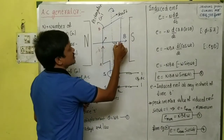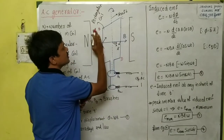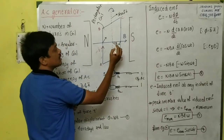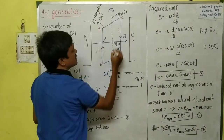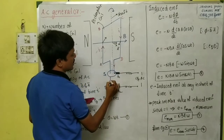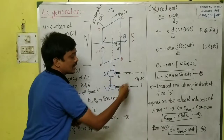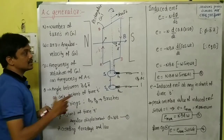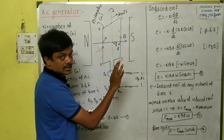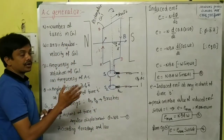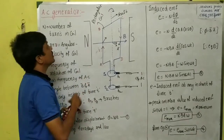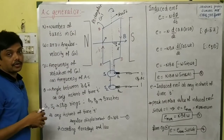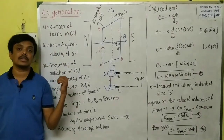When one end moves outward and the other moves inward, the direction of motion changes, so the direction of induced current also changes. After every half rotation, the direction of current changes. That is why it is called an alternating current generator — the current alternates direction for every half rotation.